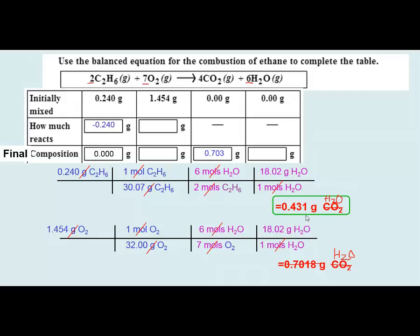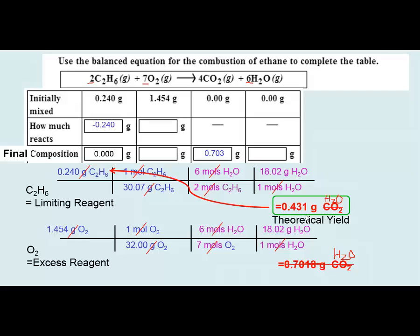The only way the limiting reagent could change is if we started with different quantities of reactants. Once you've determined the limiting reagent, it remains the limiting reagent for all stoichiometric calculations in that same reaction. So I could have skipped the second calculation — the limiting reagent gives us the theoretical yield for both CO2 and water. My theoretical yield of water is 0.431 grams, which I place in the table.